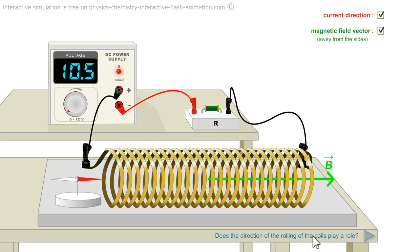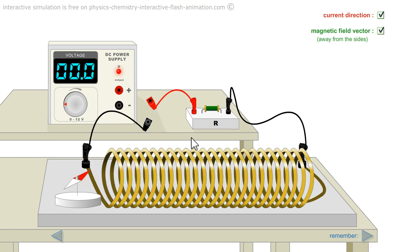Can the direction of winding of the turns play a role? So I will go back to the previous situation. Red on red. The magnetic field is to the left.